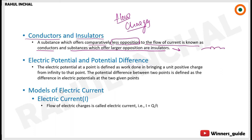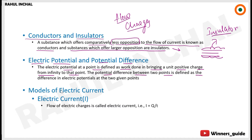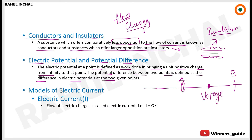Electric potential at a point is defined as the work done in bringing a unit positive charge from infinity to that point. Potential difference between two points is defined as the difference of electric potential at the two given points. For example, take a conductor with point A and point B — the voltage calculated from point A to point B is called the potential difference.